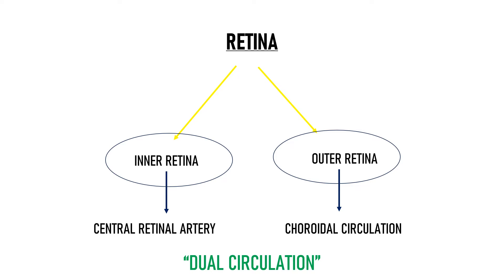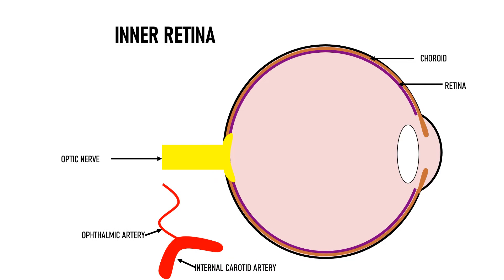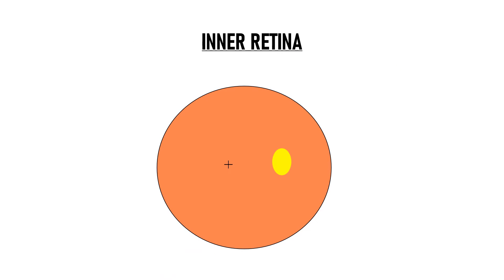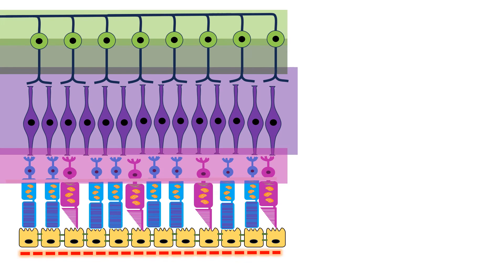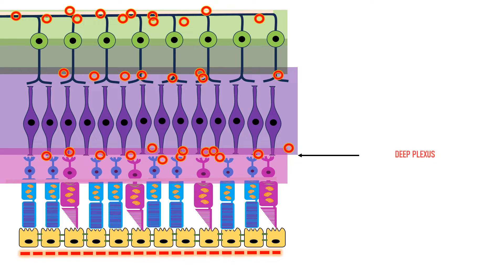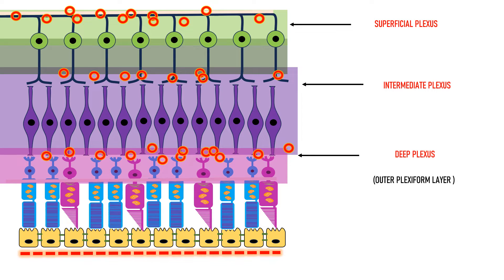Talking about the inner retina first: the central retinal artery enters the eye through the optic nerve and then divides into various branches to reach within the retinal layers. These branches form three plexuses that lie at three different levels in the retina — a deep plexus, an intermediate plexus, and a superficial plexus of vessels. The deep plexus lies at the level of the outer plexiform layer, the intermediate plexus corresponds to the inner plexiform layer, and the superficial plexus corresponds to the nerve fiber layer of the retina.